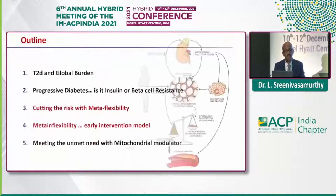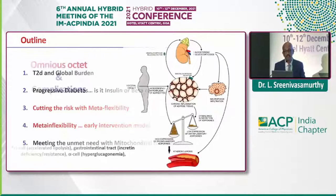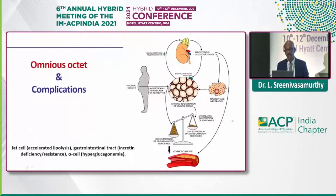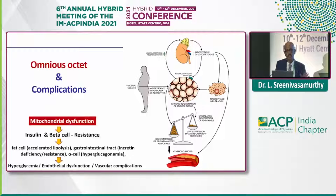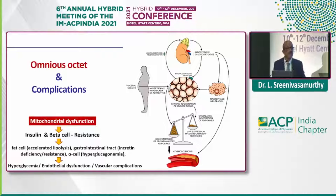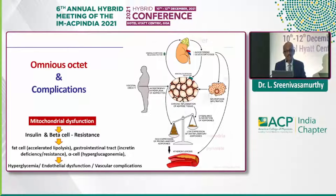Let us look at this metabolic flexibility. Normally, as you can see here, the hyperplasia of adipocytokines results in chronic inflammation and an imbalance between the expression of pro-inflammatory cytokines — which is one of the typical pathogenesis pathways proposed in the Indian context. We are now proposing that mitochondrial dysfunction is one of the key defects in insulin and beta cell resistance, which ultimately acts upon various systems resulting in endothelial dysfunction, RAS activation, and vascular complications.